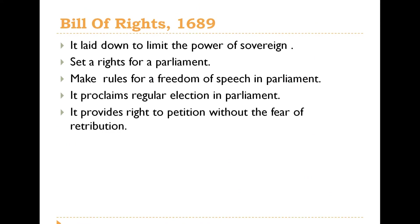The Bill of Rights in 1689 brought other human rights issues into focus. It told us that there is a limit to the power of the sovereign. It established rights for Parliament, rules for freedom of speech in Parliament, and a focus on regular elections in Parliament. These and other human rights issues were addressed in the Bill of Rights in 1689.